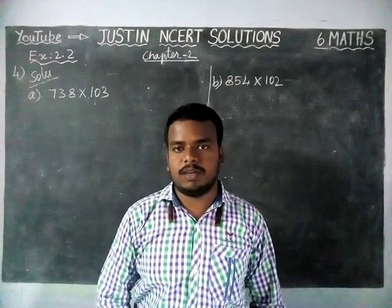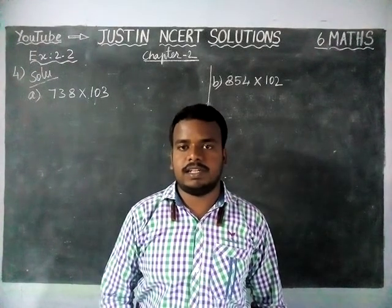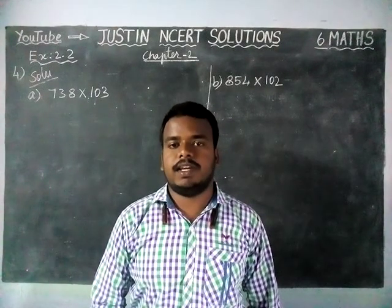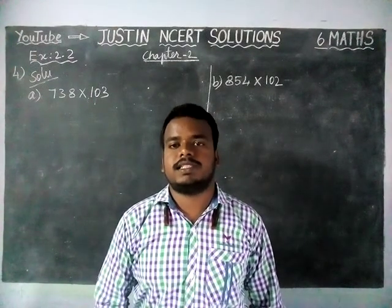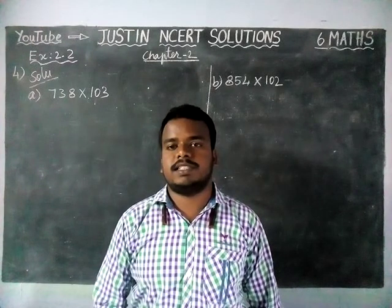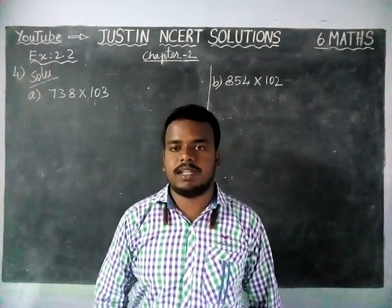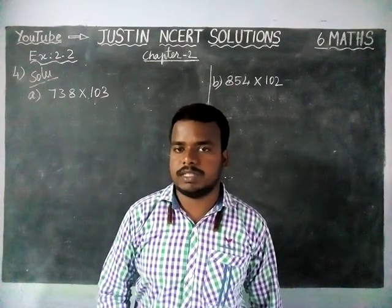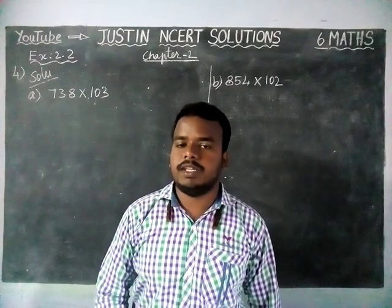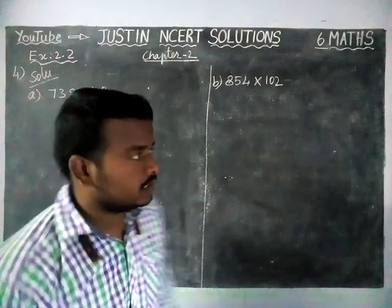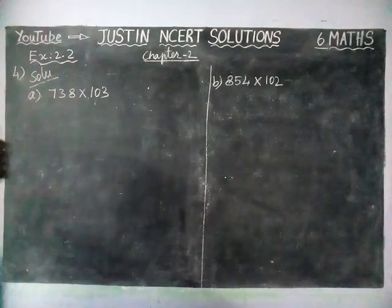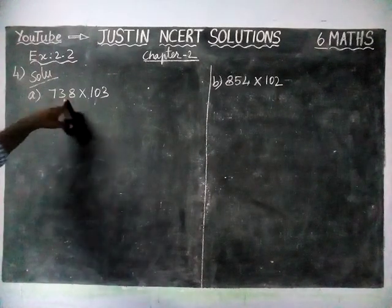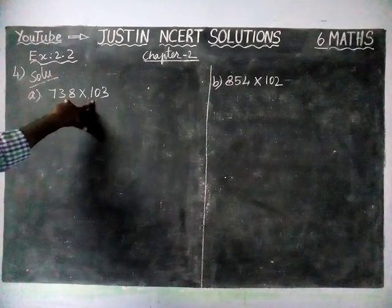Hi students, welcome to Justine NCRT Solutions. In this video, we are going to see Class 6 Maths Chapter 2, Exercise 2.2, 4th question. Find using suitable properties. The given numbers are 738 into 103.